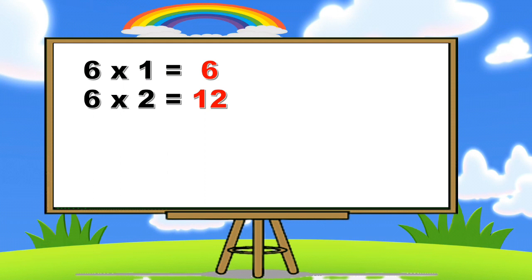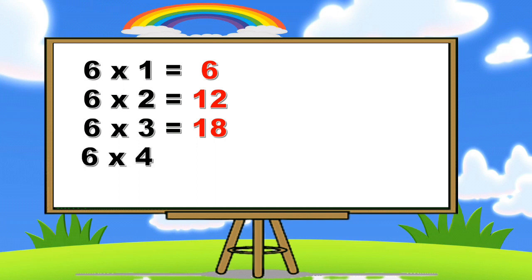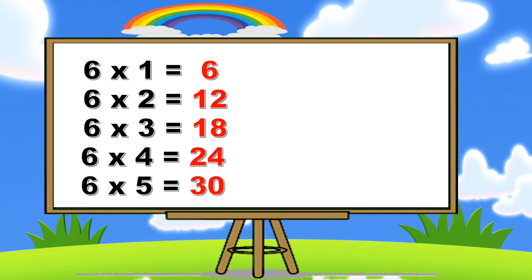Six ones are six. Six twos are twelve. Six threes are eighteen. Six fours are twenty-four. Six fives are thirty.